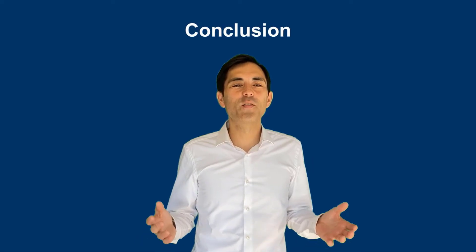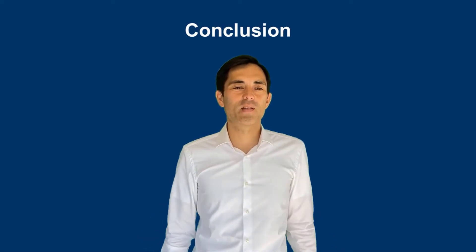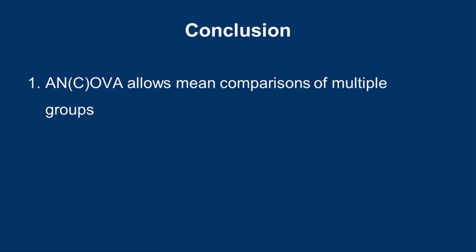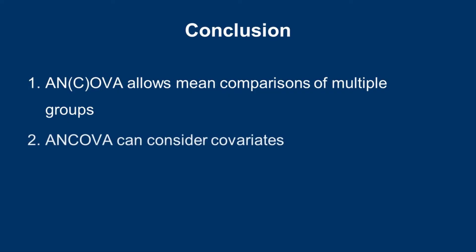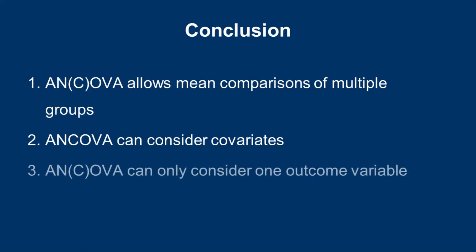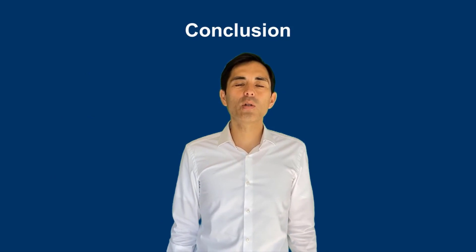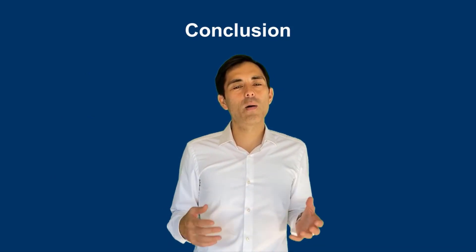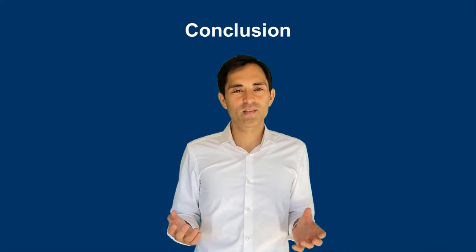Now we're reaching the end of the video. Let me summarize. ANOVA, or also ANCOVA, allows mean comparisons of multiple groups. ANCOVA, in contrast to ANOVA, can consider covariates, which can be very useful to eliminate certain biases. Third, unfortunately ANOVA or ANCOVA can only consider one outcome variable. If you would like to simultaneously compare multiple outcome variables, MANOVA or MANCOVA would be more appropriate, and there's another video about that. With that, I would like to close this video — thank you, bye-bye.